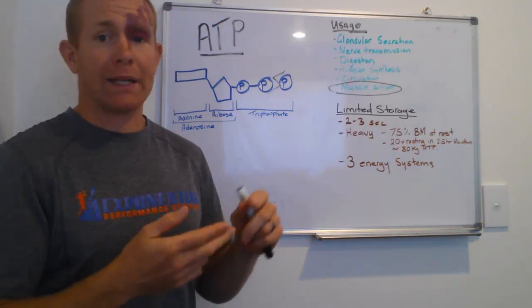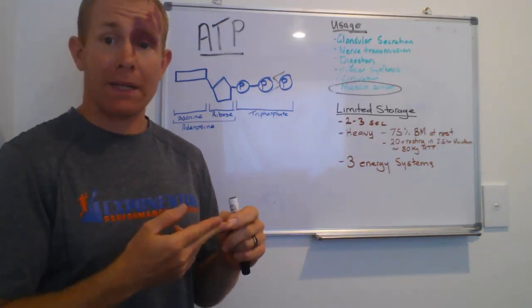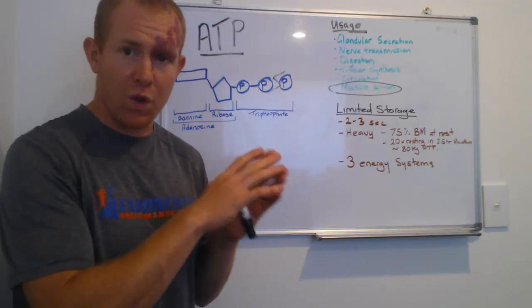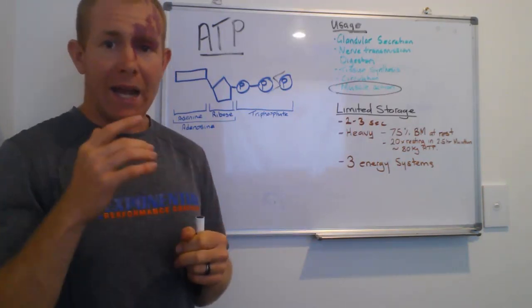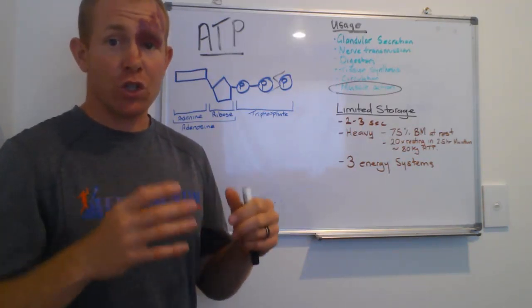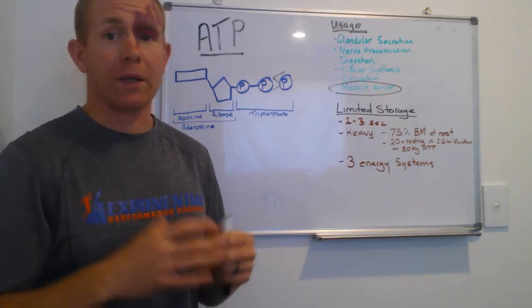Our anaerobic glycolytic and our ATP-PCR system are both anaerobic. They function without oxygen. And our aerobic energy system uses oxygen, aerobic, with oxygen.